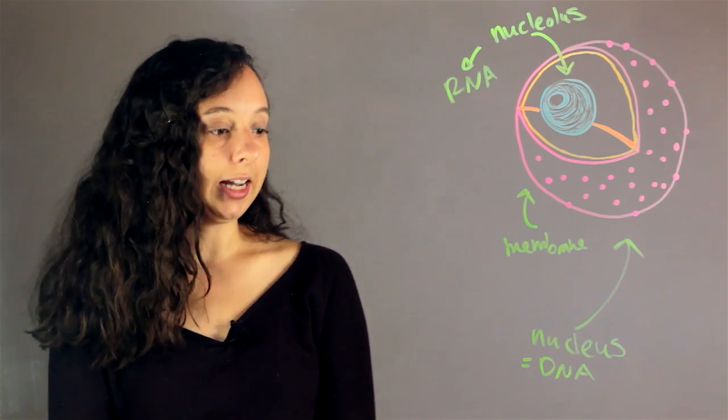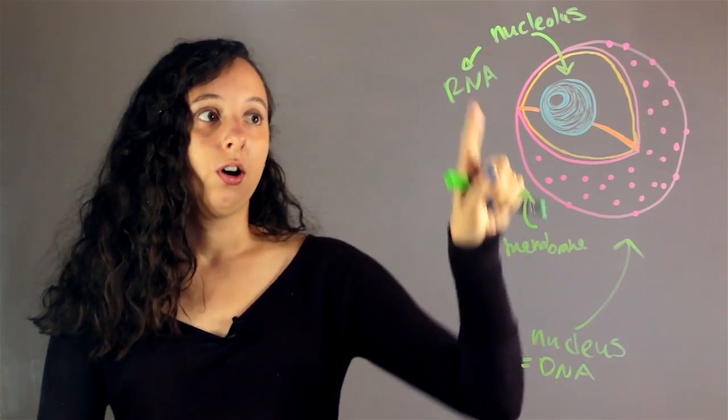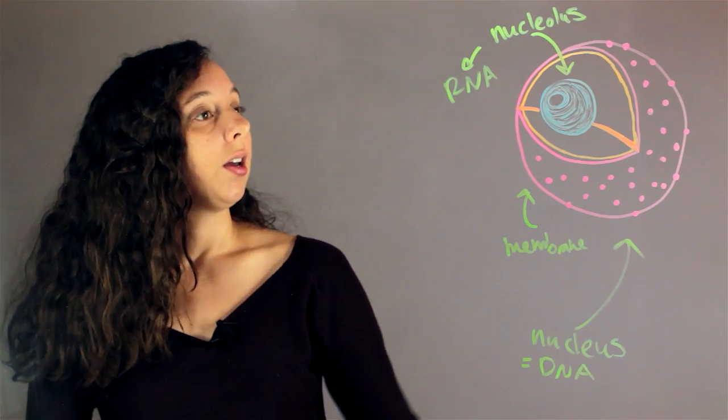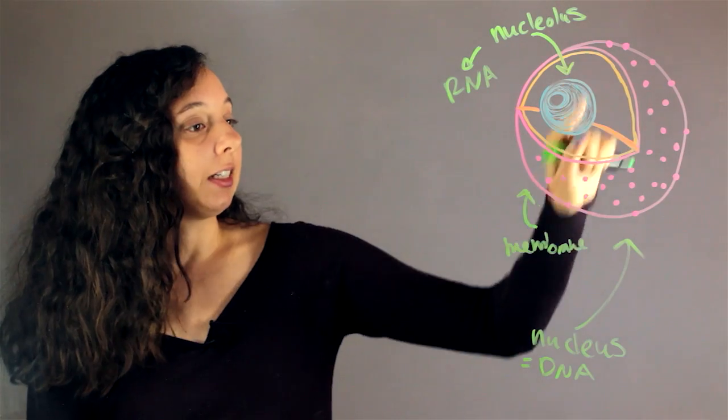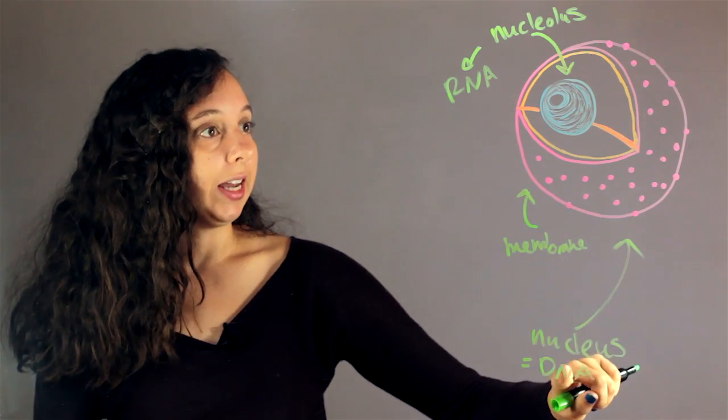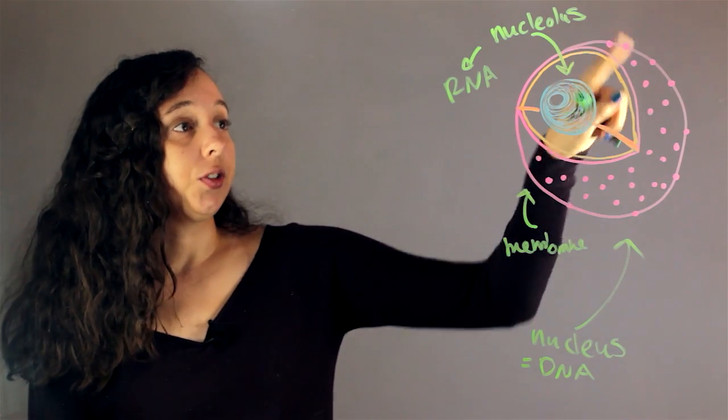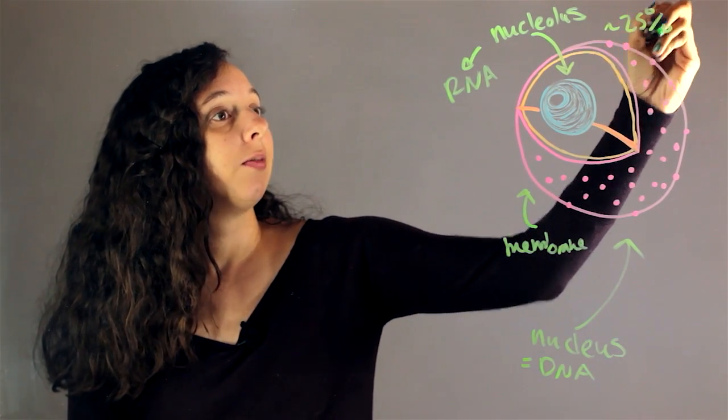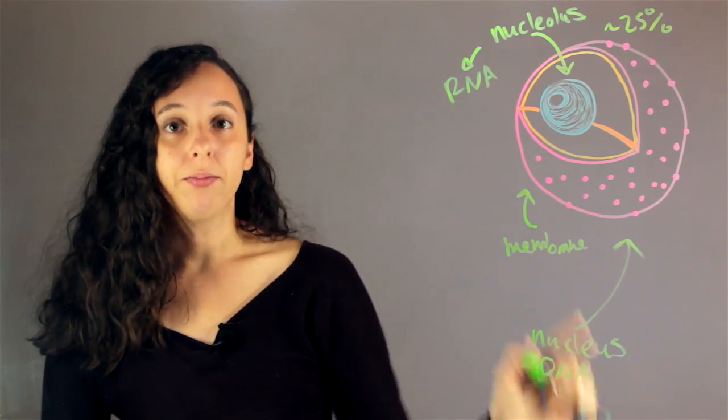And so remember that DNA has two strands, RNA only has one strand. And so the big differences are basically that there's a membrane on the nucleus, it has mostly DNA, the nucleolus is smaller, it's about 25% of the volume of the nucleus, and it has mostly RNA, no DNA.